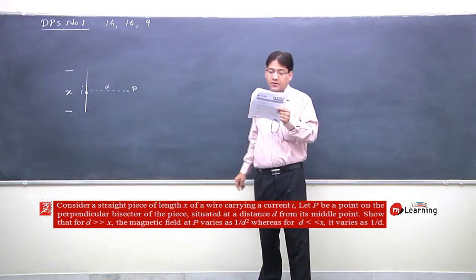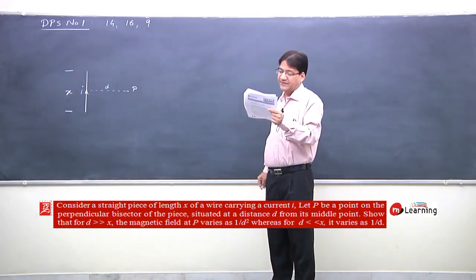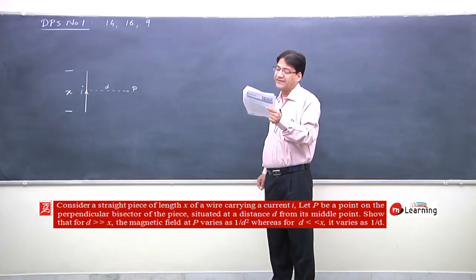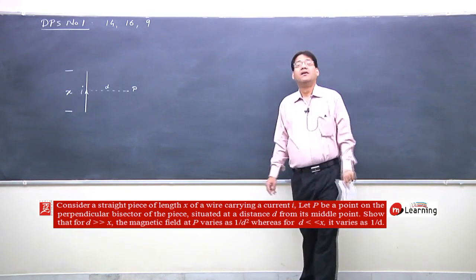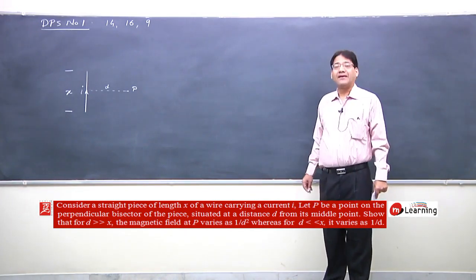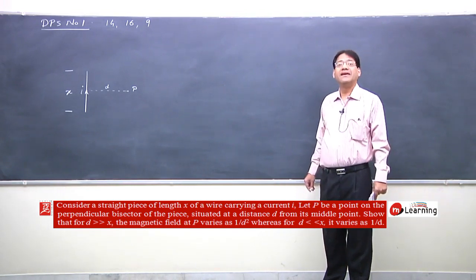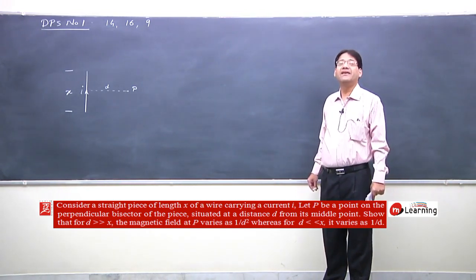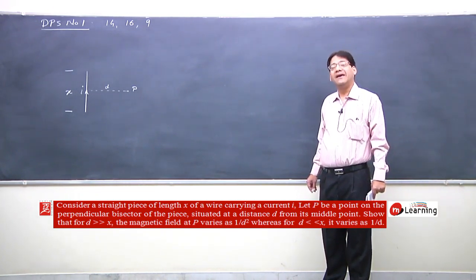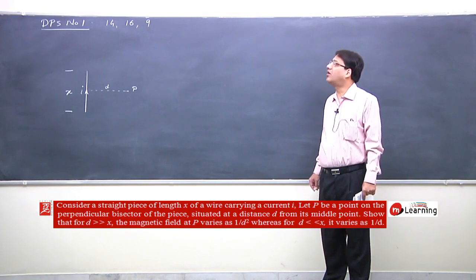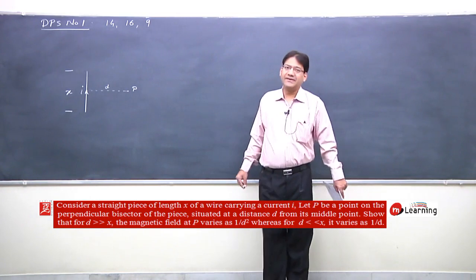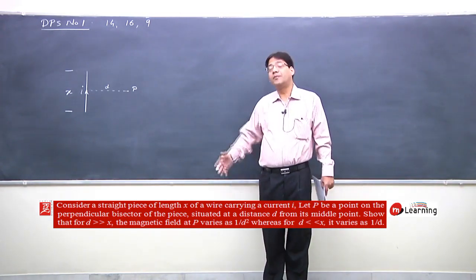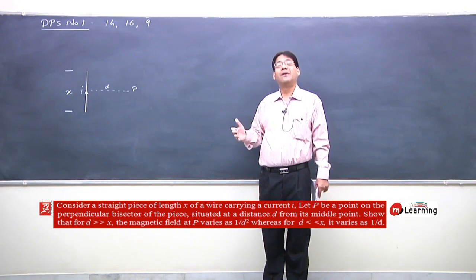If D is very large as compared to X, the magnetic field varies as 1/D². Whereas for D very very small compared to X, it varies as 1/D. We recall the expression for magnetic field due to a finite straight wire carrying current I — let's derive and revise that formula.